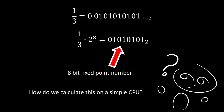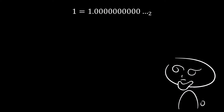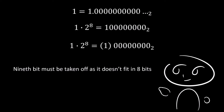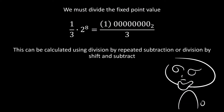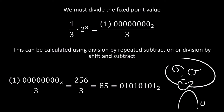How do we calculate this value on a simple CPU? We work out what 1 is as a fixed point number: take 1 and multiply it by 2 to the power of 8, giving us this number. Since we need to fit it in 8 bits, we cut off the 9th bit, which is the 1. So we represent the number 1 as a fixed point value of 0 — the 1 is still there, just not within our 8 bits. We then divide our fixed point value by the odd number. To calculate 1 third, we take our fixed point value of 1 and divide it by 3. This division can be done by repeated subtraction or division by shift and subtract. This gives us 256 divided by 3, which equals 85, our fixed point value for 1 third.